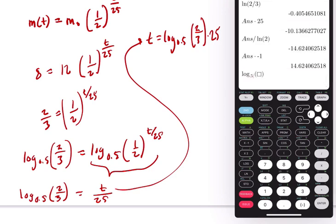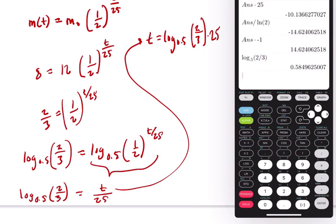Let's see how it works out. We go to math, log base, my base is 0.5, and it's of two-thirds, enter, times 25. And we get the same thing, 14.62. That's another way of thinking about it. But the idea is you can actually get the same answer with different bases. All right, I hope this helped.